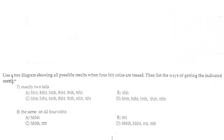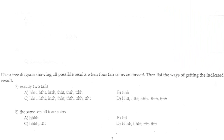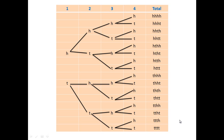Numbers 7 and 8 are about using a tree diagram showing all possible outcomes when flipping 4 fair coins. It's much better to use a tree diagram here because it's a multi-task problem. We start with head and tail — always 50/50. We go through the first, second, third, and fourth task, giving us 16 total combinations.